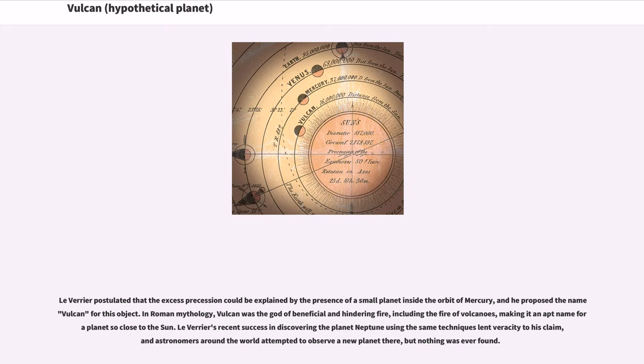Le Verrier's recent success in discovering the planet Neptune using the same techniques lent veracity to his claim, and astronomers around the world attempted to observe a new planet there, but nothing was ever found.